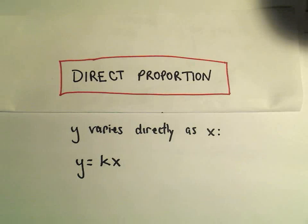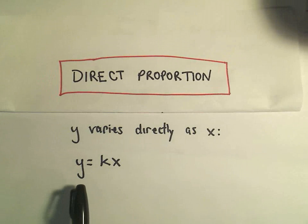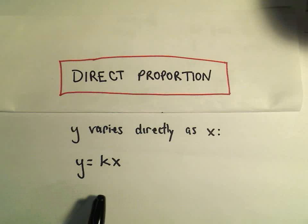Alright, in this video I'm going to do an example of direct proportion. If we say y varies directly as x, the way we can write that is y equals kx. We could also write it as x equals ky, so either of those are fair to say.